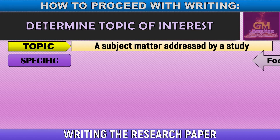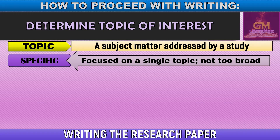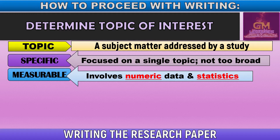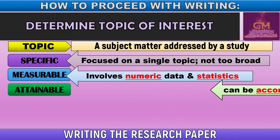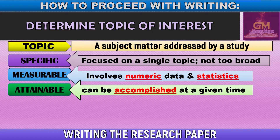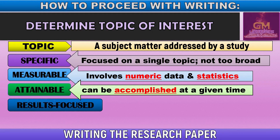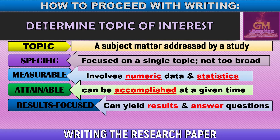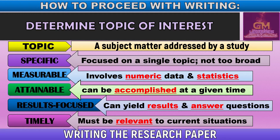First, it must be specific — focused on a single topic that is not too broad or too narrow. Second, since this is a quantitative research, it must be measurable, meaning it involves numeric data and statistics. Next, it must be attainable, meaning it can be accomplished at a given time. Next would be results-focused — it can yield results and answer the stated questions. And lastly, it must be timely, meaning relevant to current situations and not something obsolete or already conducted years before.